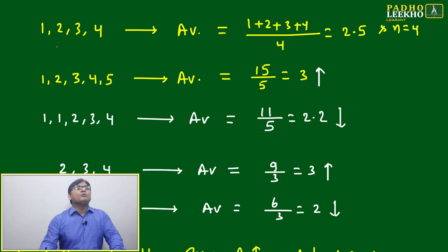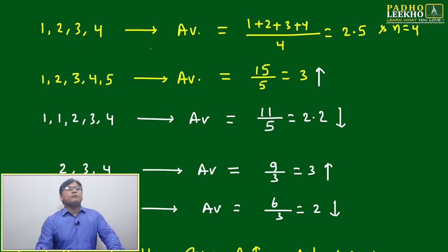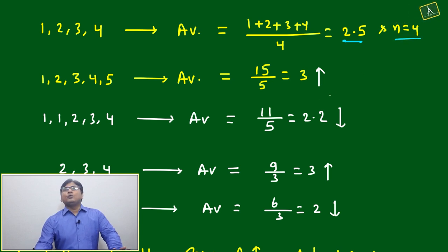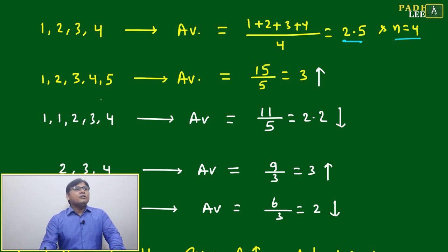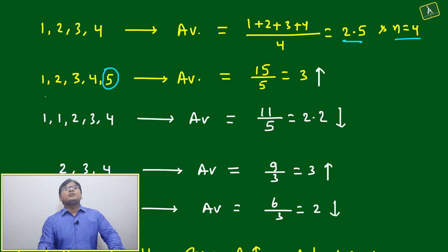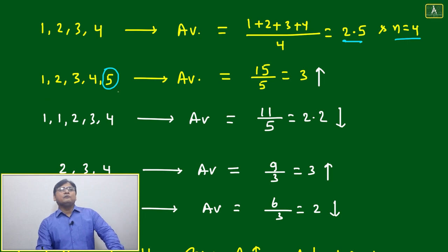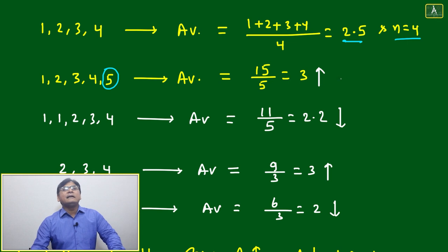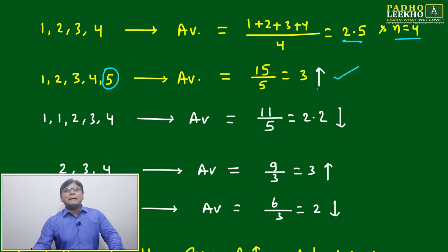To make this more clear: the average of 1, 2, 3, 4 will become (1+2+3+4) divided by 4, which is 2.5. So n is equal to 4. Now if you add one number, 5, the group becomes {1, 2, 3, 4, 5} and the average will become (1+2+3+4+5) = 15, divided by 5, so average becomes 3.